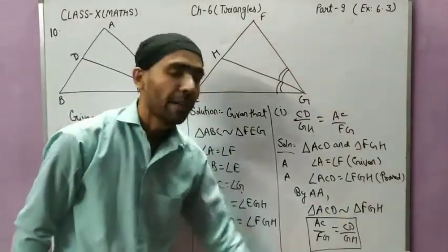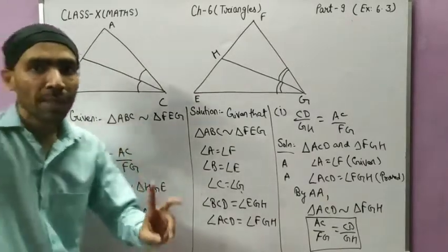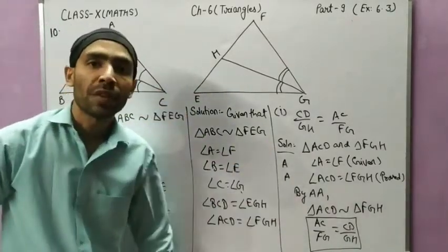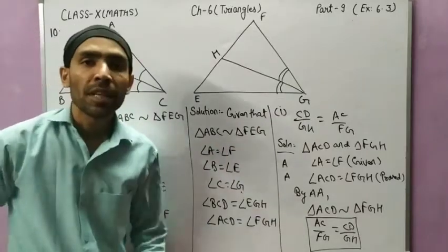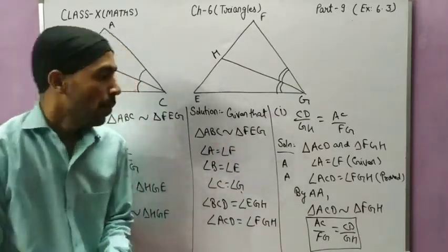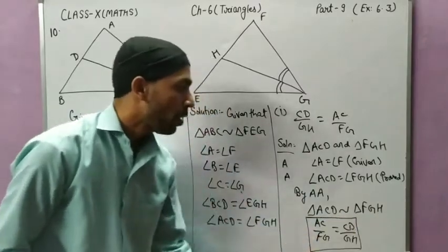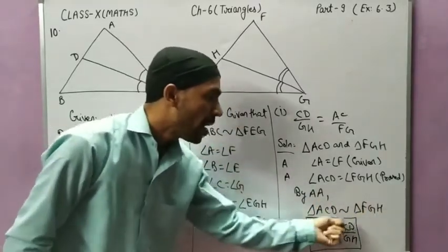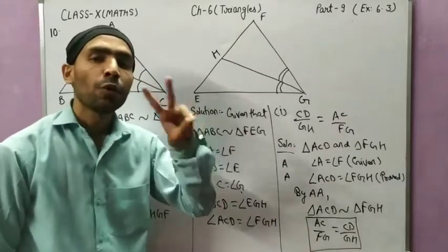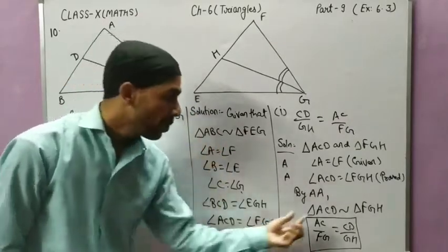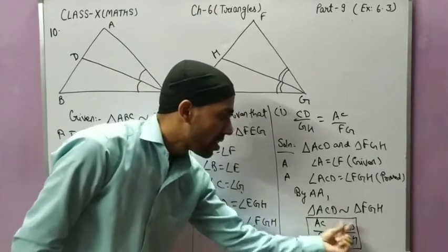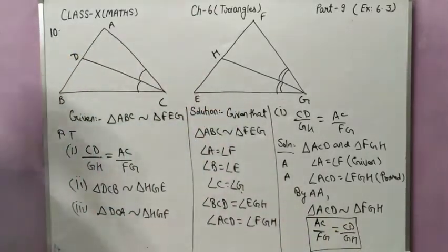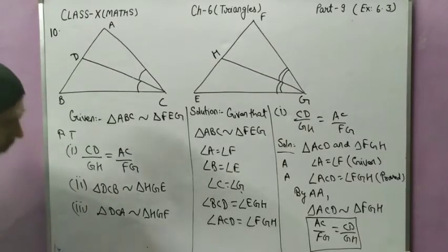If two triangles are similar, then all corresponding sides are proportional. So AC by FG equals CD by GH equals AD by FH. Taking AC by FG and CD by GH, we have proved the first part. So first part is proved.